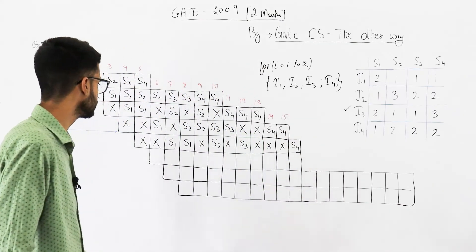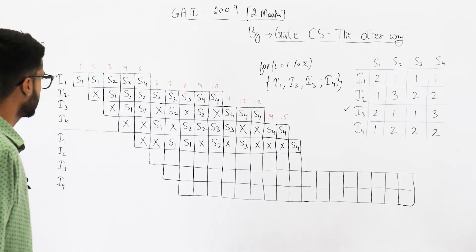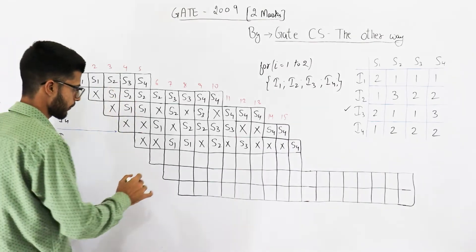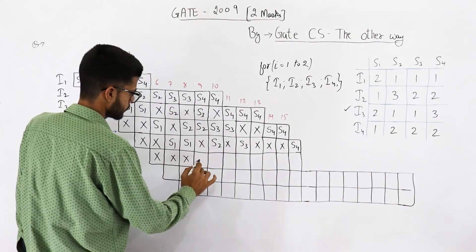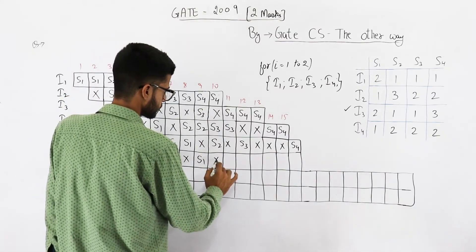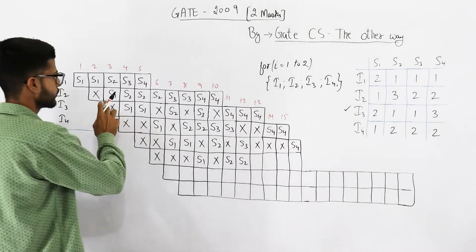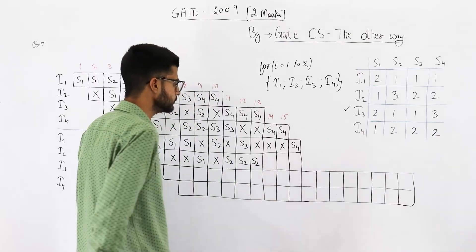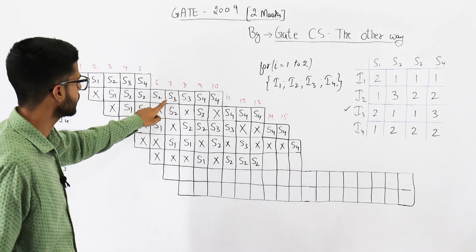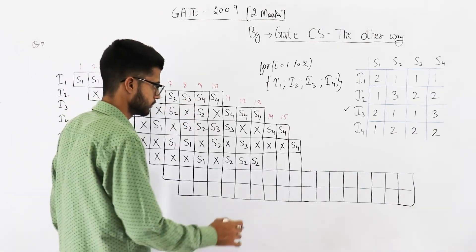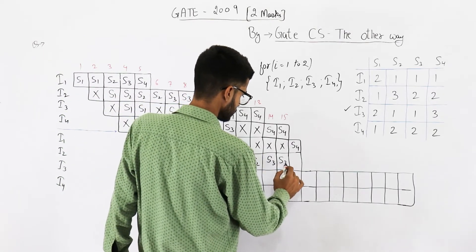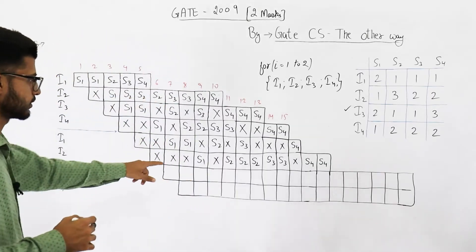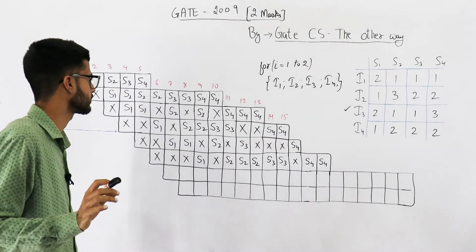Then instruction number i2 requires s1, s2, s2, s2 like this. Then instruction i2: s1, three times s2, then it requires two s3 and two s4.